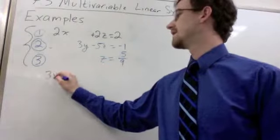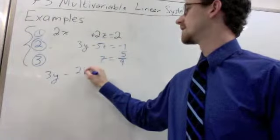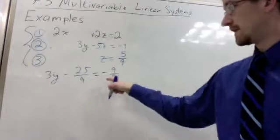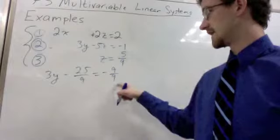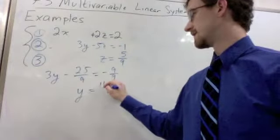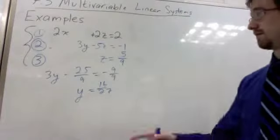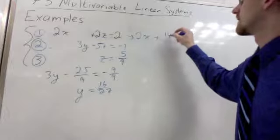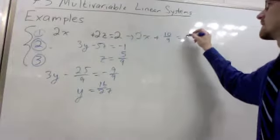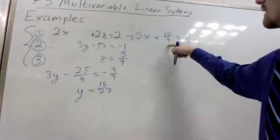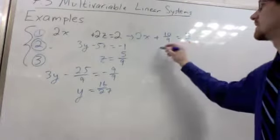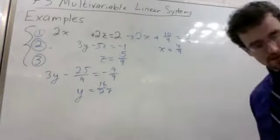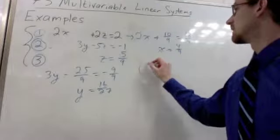And from here, we just plug into our previous equations to solve for the other two variables. 3y minus 25 over 9 is negative 1, which is negative 9 over 9. Plus 25 gets us 16 ninths divided by 3. Gets us 16 over 27. And then plugging into our first equation, we can solve for x. 2 times 5 ninths is 10 ninths. 2 is 18 over 9. Subtracting 10 ninths gets us 8 ninths. Divided by 2. Gets us x equals 4 ninths.